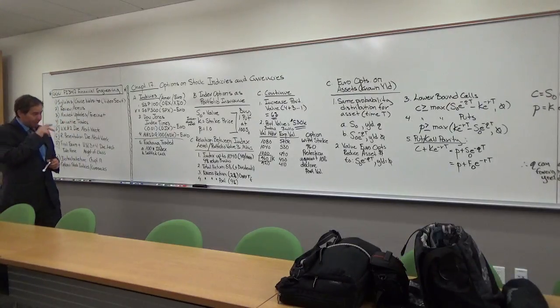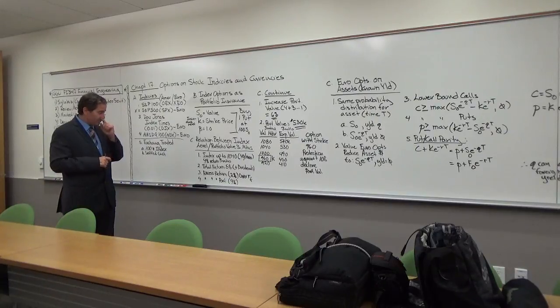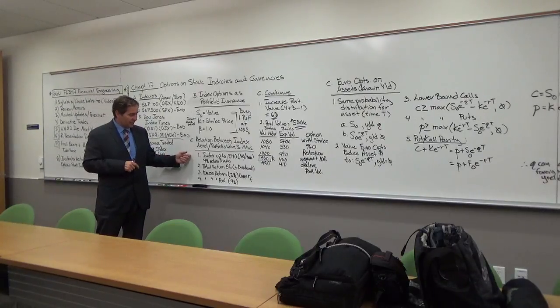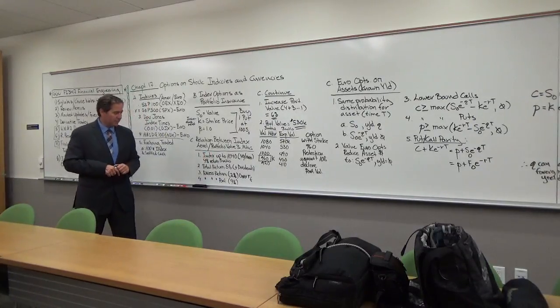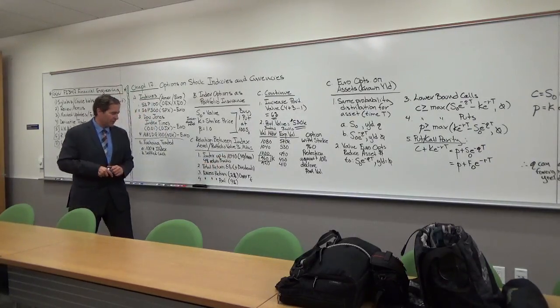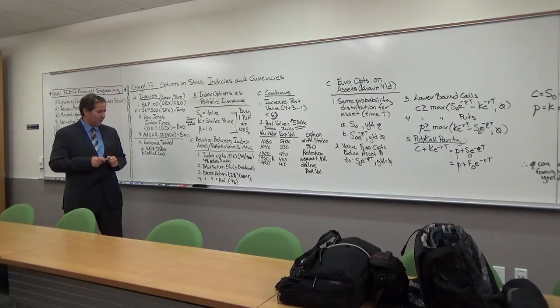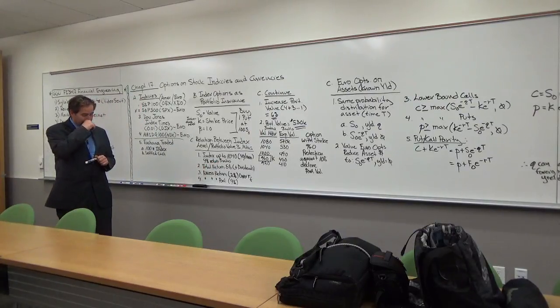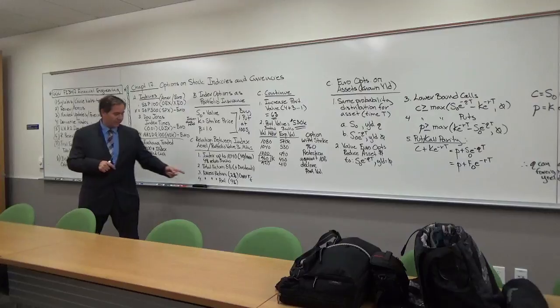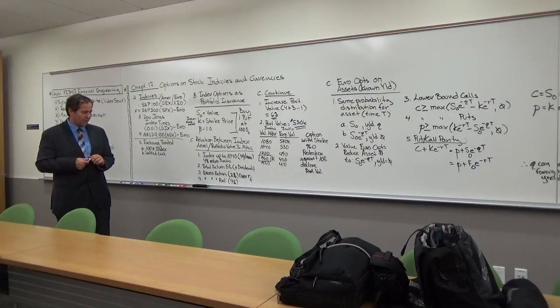And then the relationship between the index level and the portfolio value. Let's say the index goes up from 1,000 to 1,040, so it's 40 divided by 1,000, so that's a 4% return. The total return also includes the dividends. The excess return is the total return minus the risk-free rate, and then the excess return on the portfolio in this case is 4%.